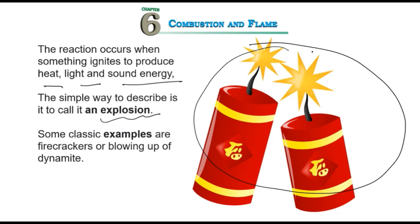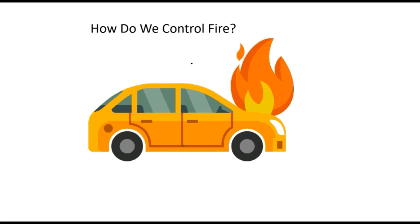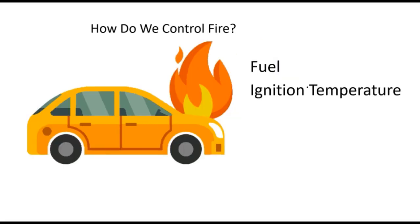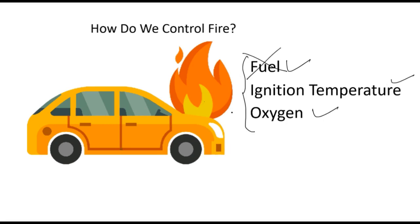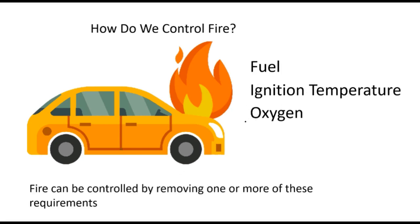Now let us discuss how to control fire. We need three things which cause fire: fuel, ignition temperature, and oxygen. To control fire, either stop the fuel, stop the oxygen, or bring down the ignition temperature. If you control any one or more of these components, the fire will be controlled easily.